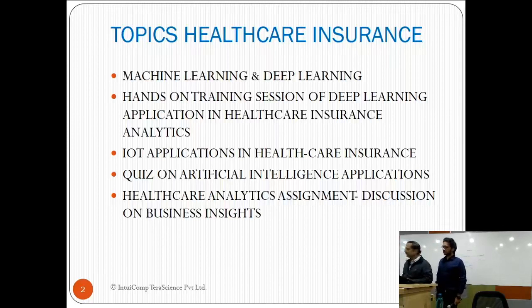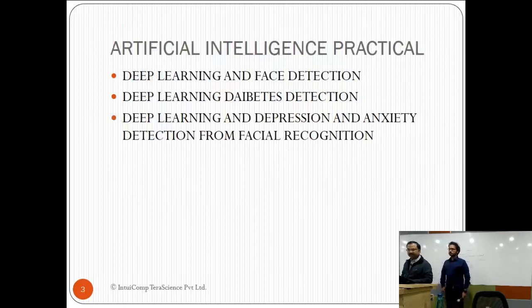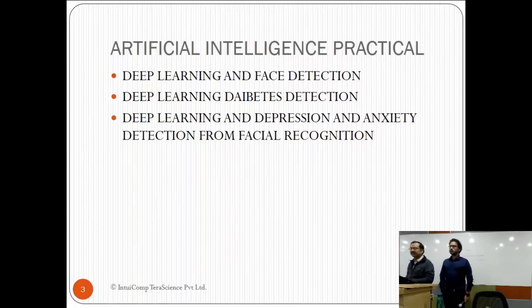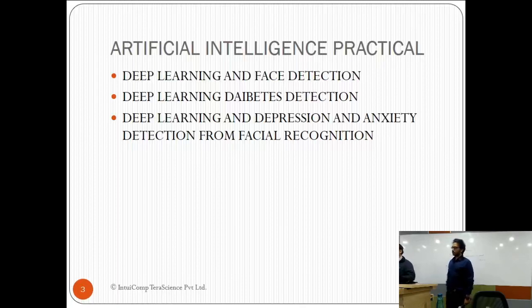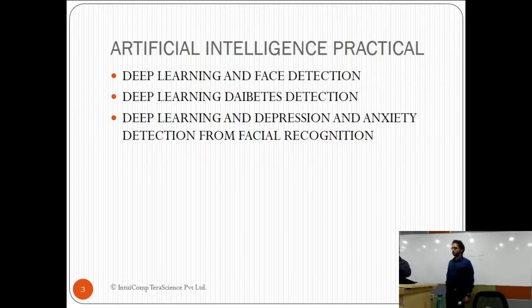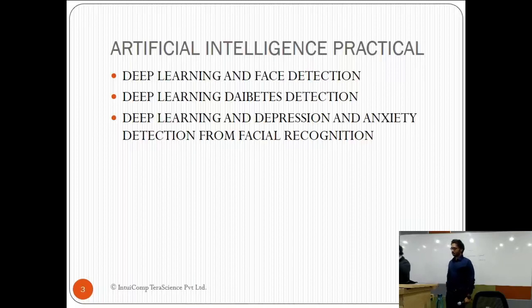Healthcare analytics assignment discussion on business insights will be covered today. AI practical stations include deep learning specifications. Deep learning is used in diabetes detection, and nowadays things are moving toward non-invasive procedures — no pricking required. More and more AI will be used for initial prediction. Predictive modeling can tell you: if you're 20 with a certain condition and take the right measures, you may not become diabetic until age 70 — showing how we can improve the health score index.